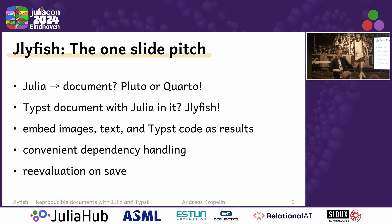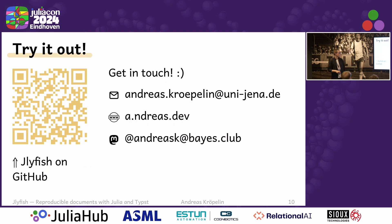Here's the one-slide pitch: why should you use Jellyfish? We've heard about Quarto, and you might wonder why not just use that. If you have Julia code and want to put it in a document, probably just use Quarto or Pluto. But if your premise is that you want to use Typst, you like Typst, you want to build your document in Typst, and additionally want to add some Julia — then this is for you. You can embed images, text, and Typst code; summary tables work flawlessly. There's dependency handling and other nice features. Try it out, it's on GitHub, and if you have ideas to improve it, just get in touch. Thank you very much.